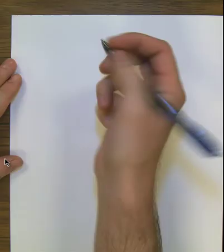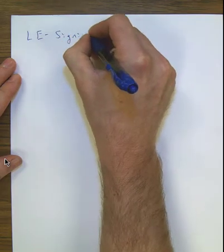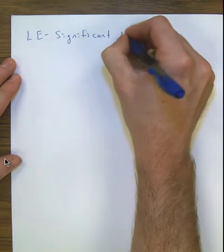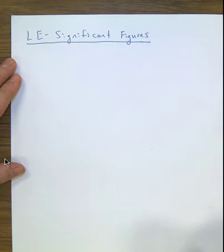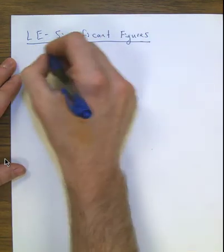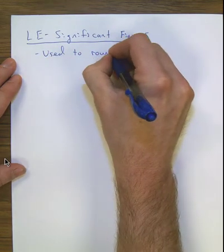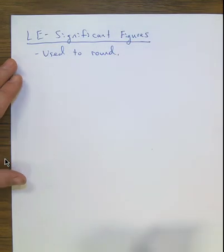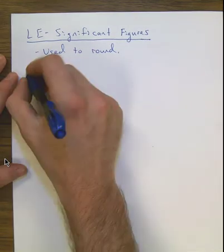This is Mr. Barron. We're going to learn how to round in chemistry using something called significant figures. Write down these notes as your reference for rounding long numbers in this class — we're calling this lesson 'Significant Figures.' Significant figures are used to round, and we follow specific rules to understand which numbers are actually significant in a measurement.